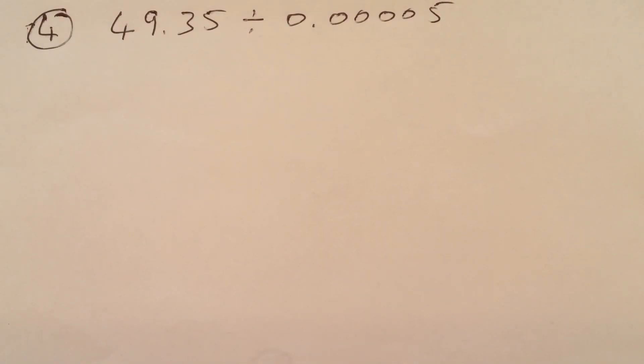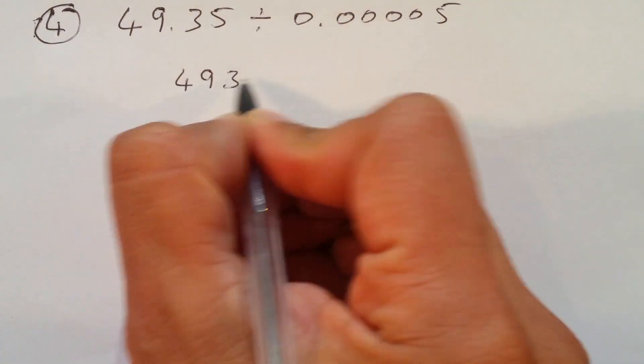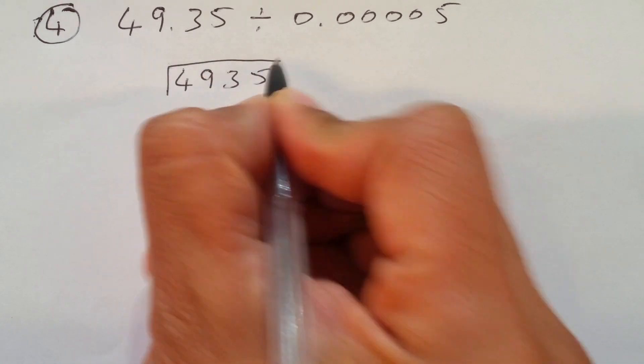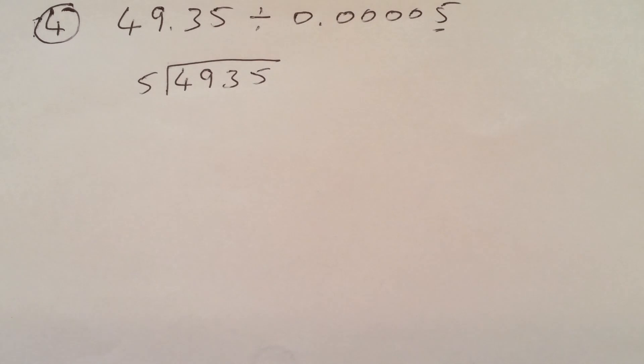Right, the next one is 49.35 divided by 0.00005. People find it hard. It's not hard at all. As we discuss in multiplication, ignore the decimals. Write down 4935 divided by just 5. So, we'll use short division method here, or you can use long, whichever you like, but ignore the decimal. Don't carry the decimal with you.